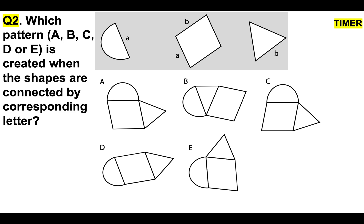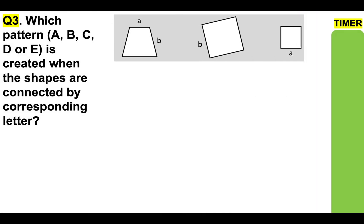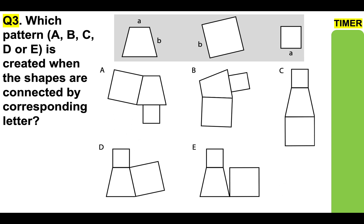Okay, well done. And of course, the best way to practice any type of spatial reasoning test is to conduct lots of practice questions. Here's question number three for you to try: which pattern — A, B, C, D, or E — is created when the shapes are connected by corresponding letter? Here's your timer.